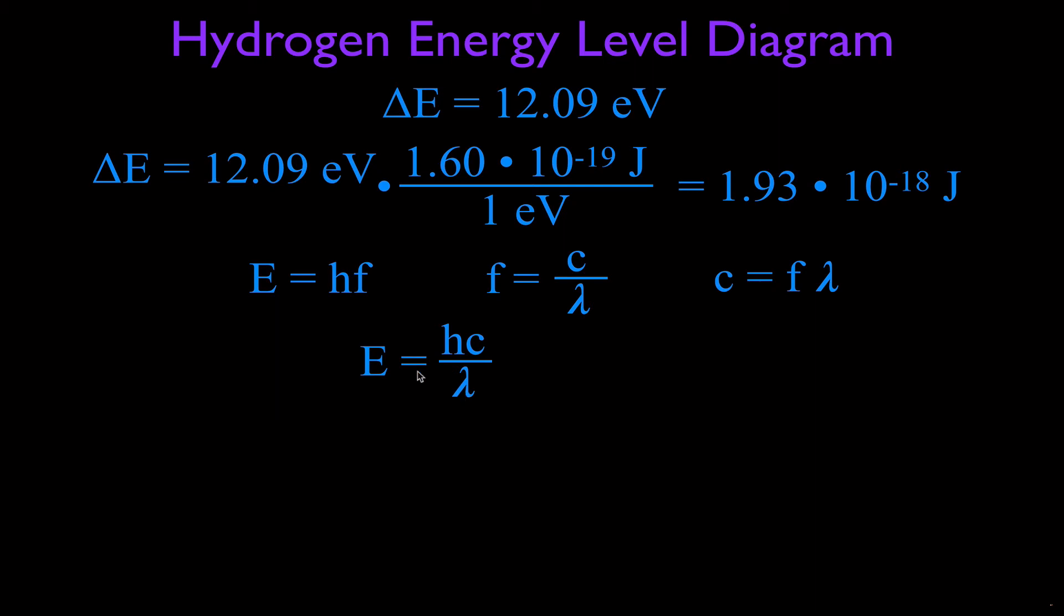And I remember this equation looks like this because I remember these two constants, Planck's constant and the speed of light are on the top of this equation, and then the wavelength is on the bottom.